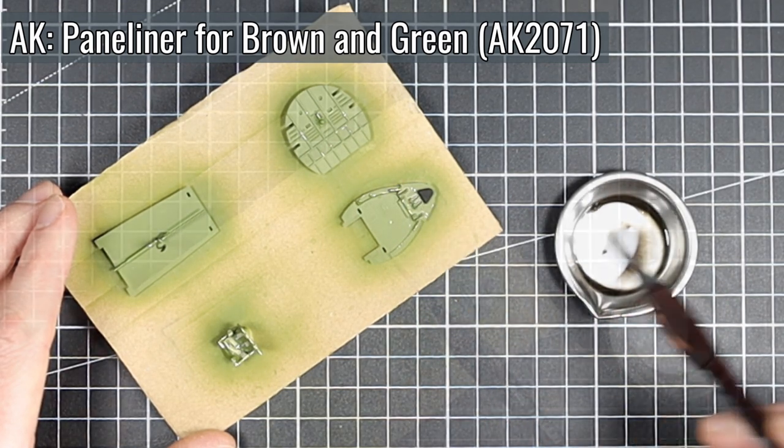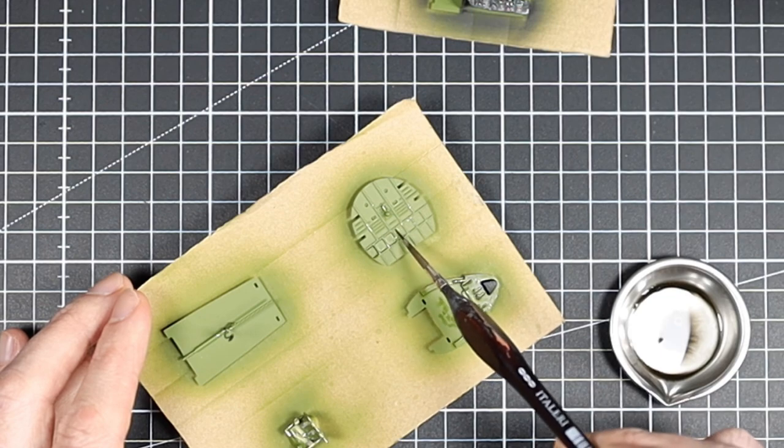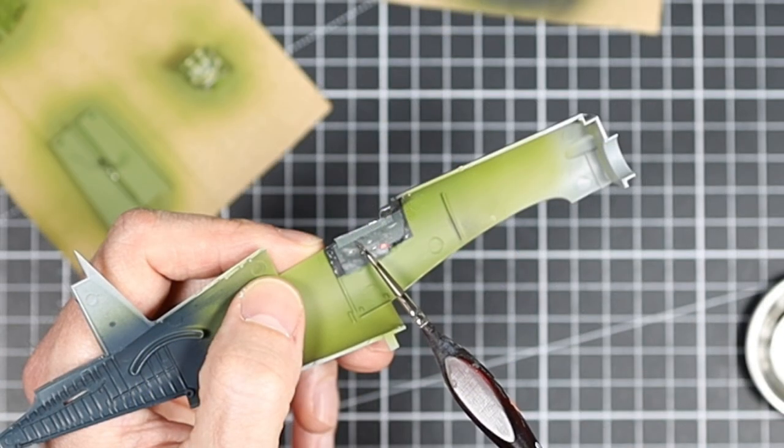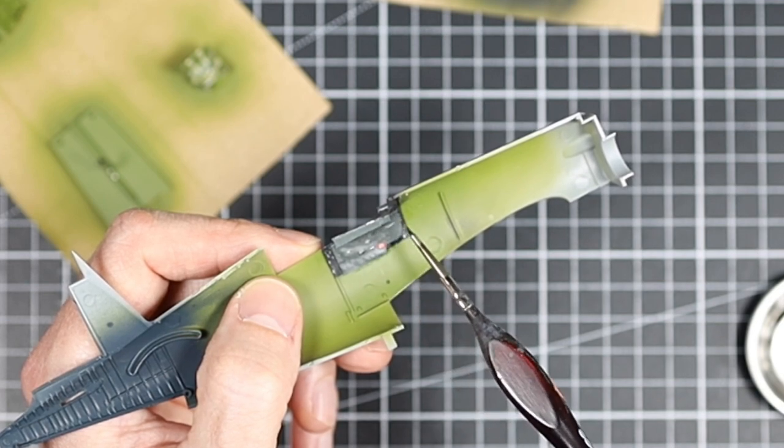Now it's time for weathering in the cockpit area and interior. I use different washes, weathering pencil and seal everything with clear varnish at the end.